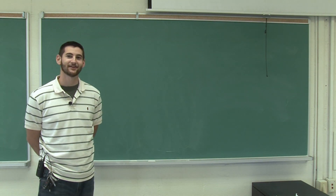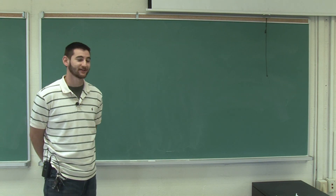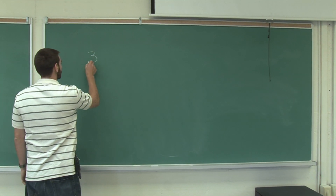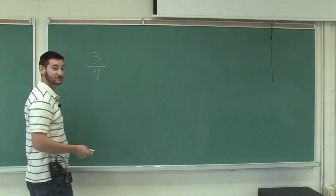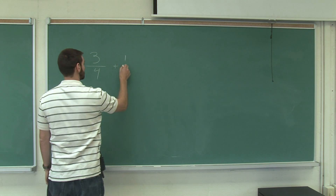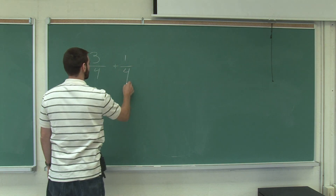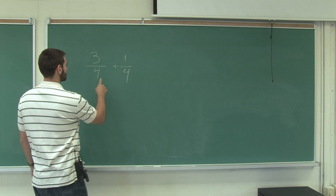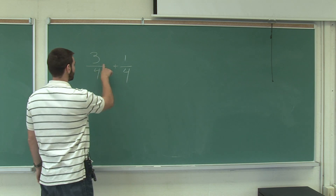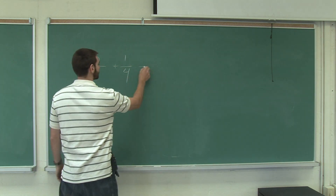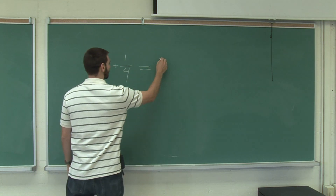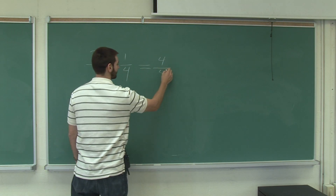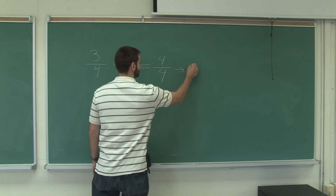Now let's learn how to add and subtract fractions. If we have the fraction 3 fourths and 1 fourth, it's important that they have the same denominator. What we do is keep the same denominator and just add the numerators. So the answer is 3 plus 1 is 4, keep the same denominator 4, and that's equal to 1.